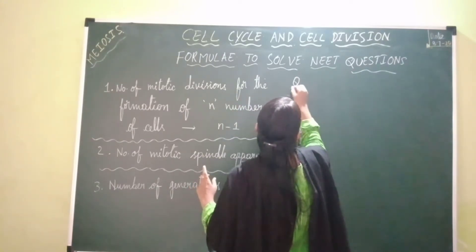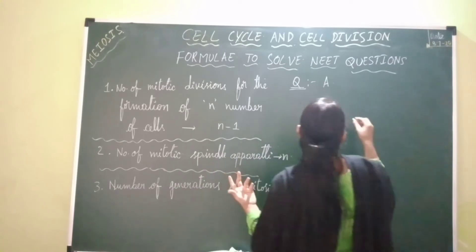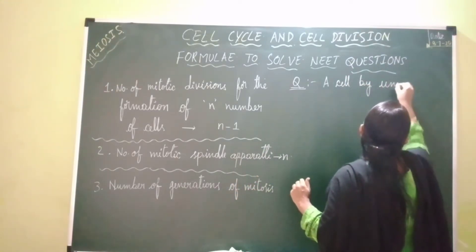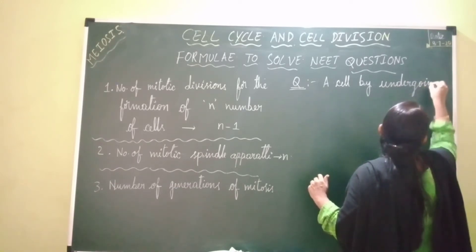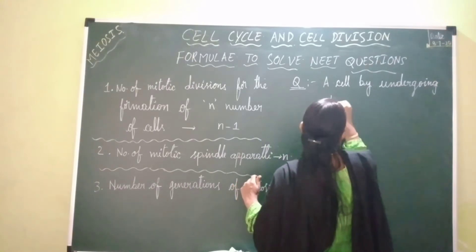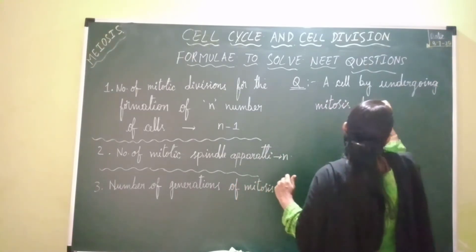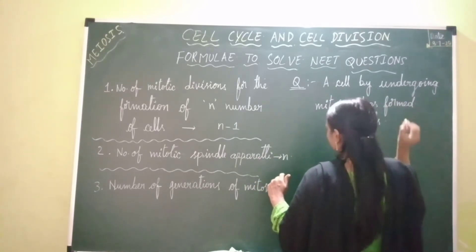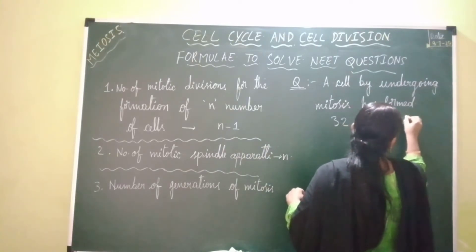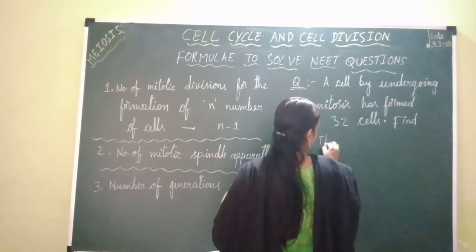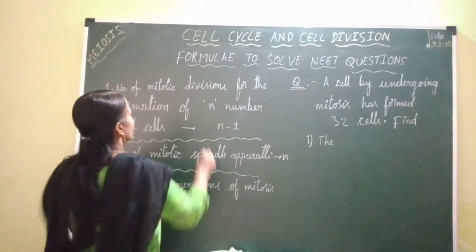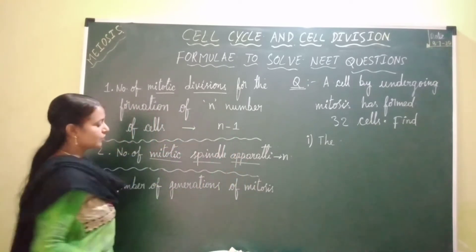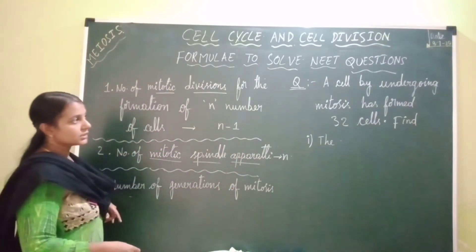There is a question: a mitocyte — a cell which undergoes mitosis — has formed 32 cells finally. Find the number of mitotic divisions, find the number of mitotic spindle apparatus required for the formation of 32 cells, and find the number of generations of mitosis that cell has undergone.